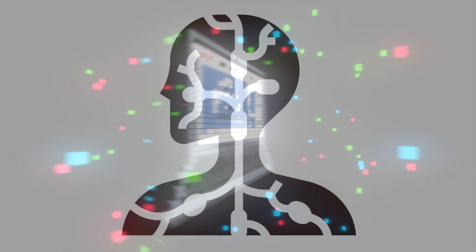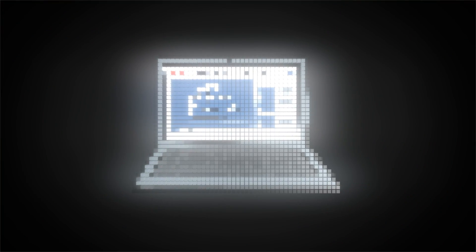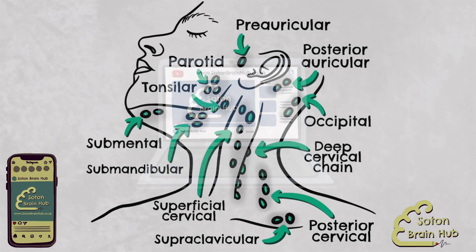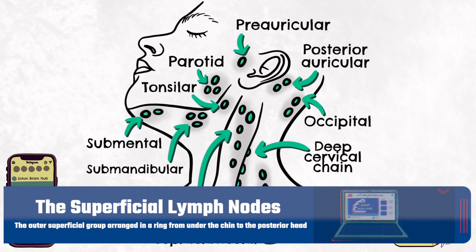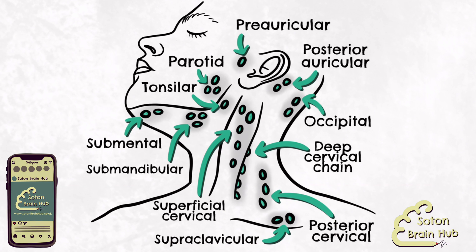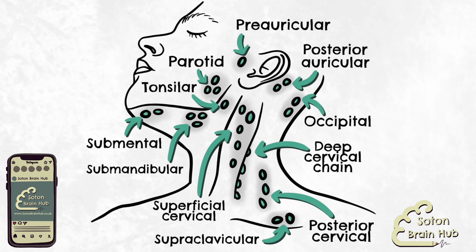Let's take a more detailed look and start naming some of the superficial nodes of the head and neck. The superficial lymph nodes in our diagram will be highlighted with the colour green to help you identify them. First up are the preauricular lymph nodes, a group usually containing between one and three nodes located anterior to the auricle of the ear. Preauricular nodes are tasked with collecting and filtering lymph from the superficial areas of the face and temporal region.